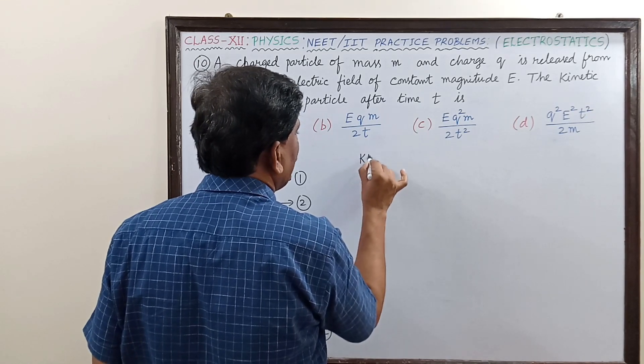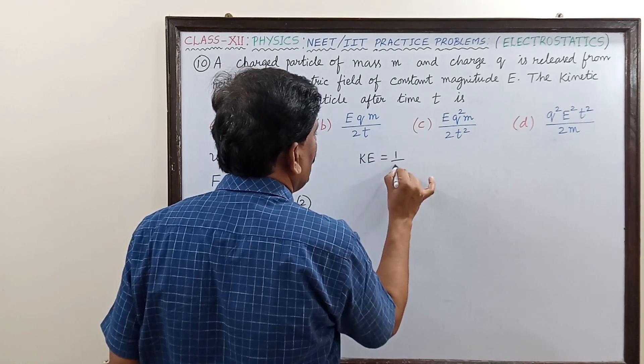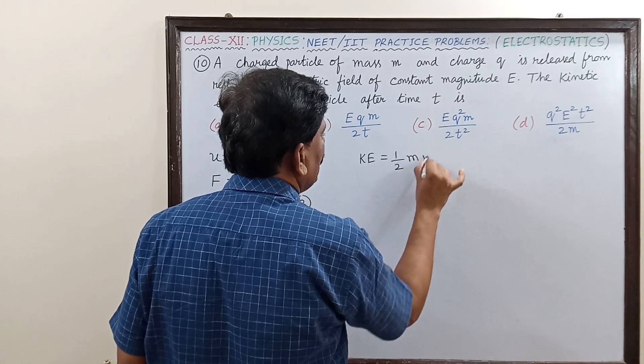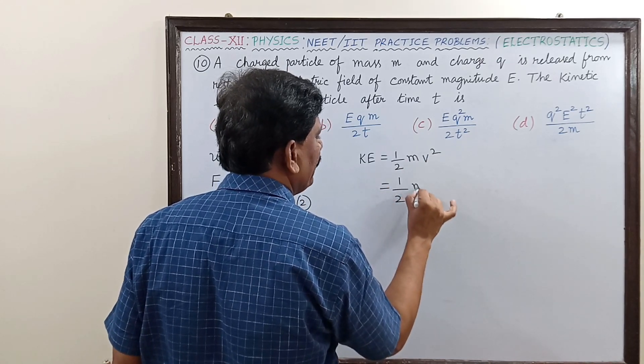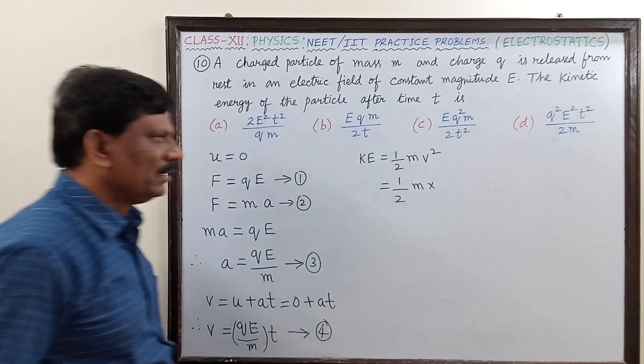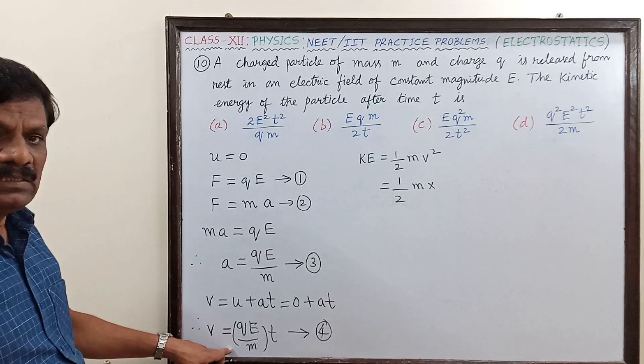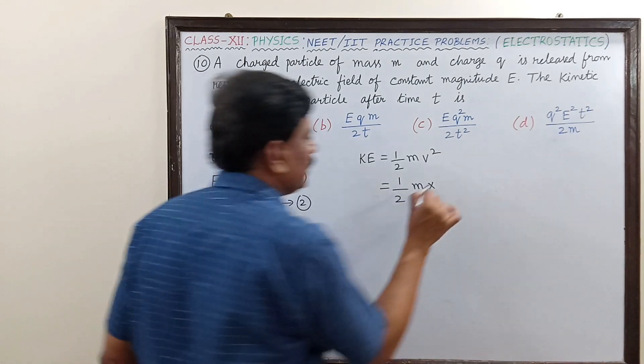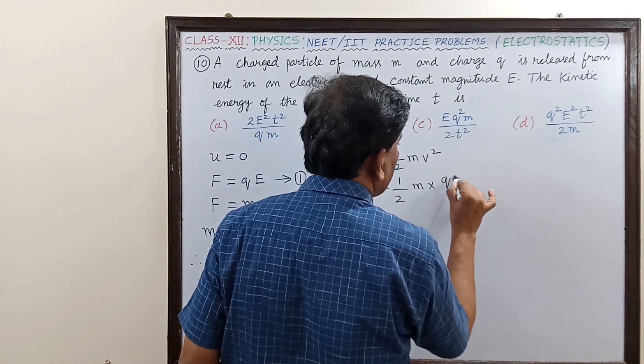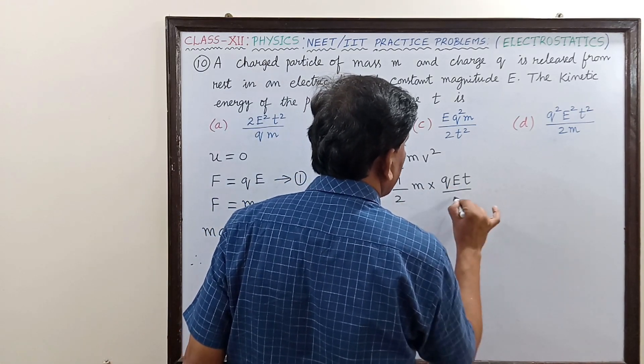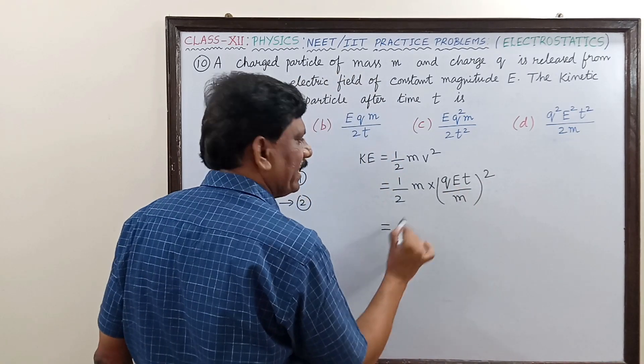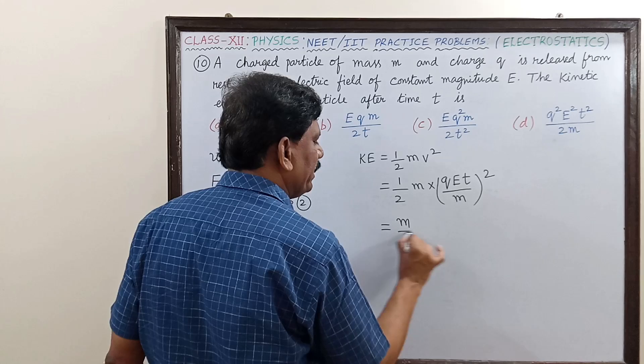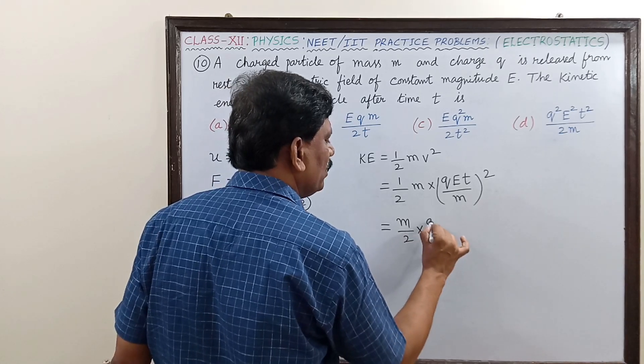Kinetic energy is equal to half mv squared. That is equal to half m into v squared. v squared is qEt by m, the whole square. This can be written as m by 2 into q squared E squared t squared divided by m squared.